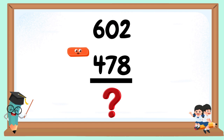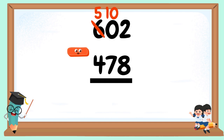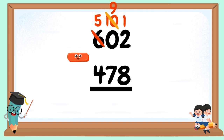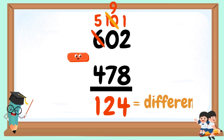602 minus 478. 8 minus 2 cannot be done. Borrow 1 ten from the 10's column, but there are 0 tens, so regroup from the 100's. 6 becomes 5 and 0 becomes 10. Borrow 1 from 10: 10 becomes 9 and 2 becomes 12. 12 minus 8 equals 4. 9 minus 7 equals 2. 5 minus 4 equals 1. 124 is our difference.